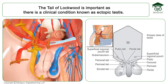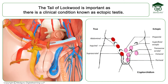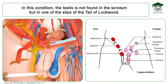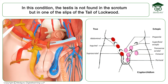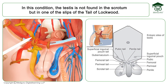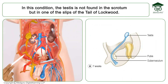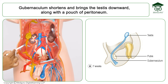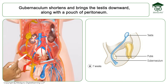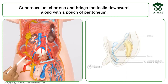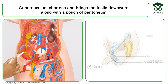The tail of Lockwood and its five slips are important because of a clinical condition known as ectopic testis. In ectopic testis, the testis is not found in the scrotum but found elsewhere, and these other places are determined by the attachment of the different parts of the tail of Lockwood. The gubernaculum is a fibromuscular band that will shorten, and as it does, it brings down a pouch of peritoneum along with the testis.